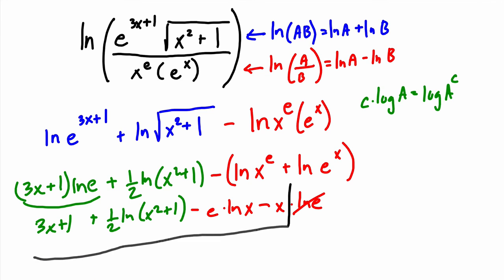But, oops, we can still combine 3x minus x, that's 2x, our final answer. 2x plus one half the natural log of x squared plus one, minus e times the natural log of x. And there are no more laws to apply or things to split up, so we are finished.